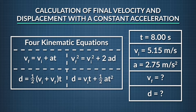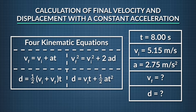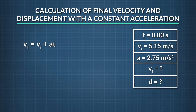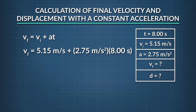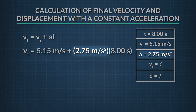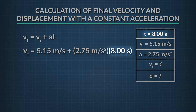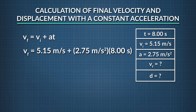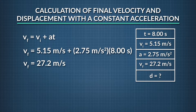When we look at the kinematic equations available to us, we can use the equation: final velocity equals initial velocity plus acceleration times time, since we have enough information to solve for final velocity with that equation. So let's plug in 5.15 meters per second for initial velocity, and add that to the product of the acceleration, which is 2.75 meters per second squared, times the time, which is 8.00 seconds. When we solve for final velocity, we find that the car was traveling 27.2 meters per second after 8.00 seconds have elapsed.